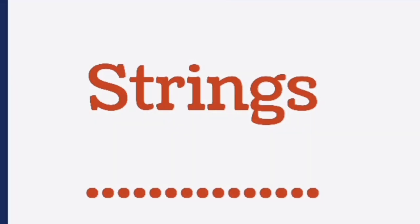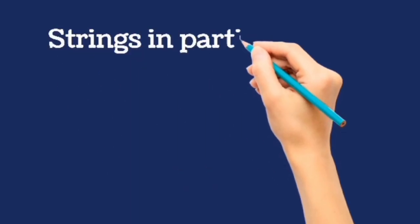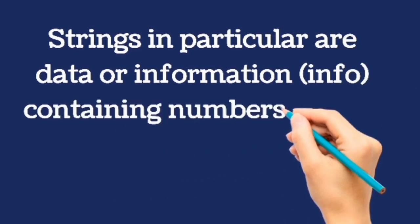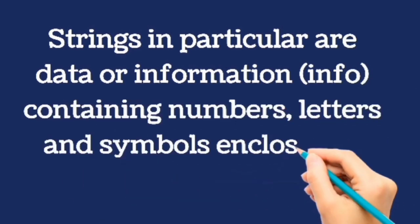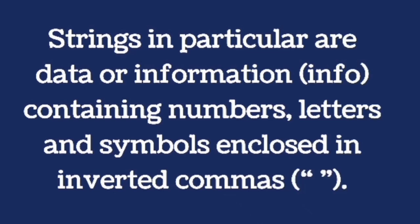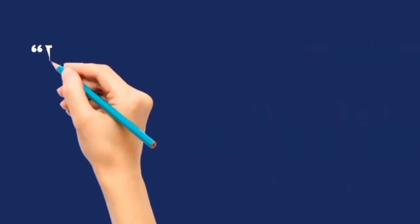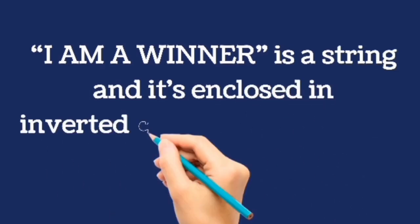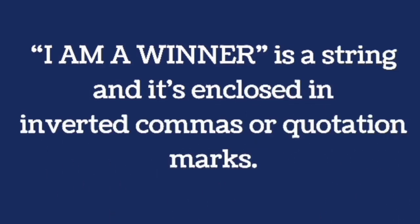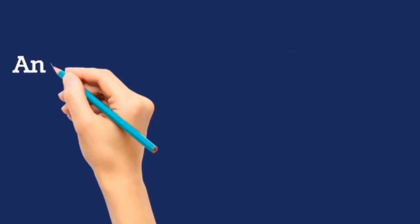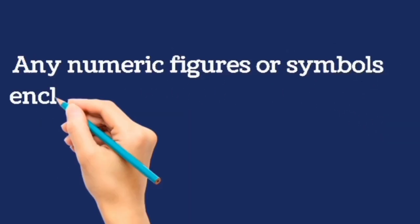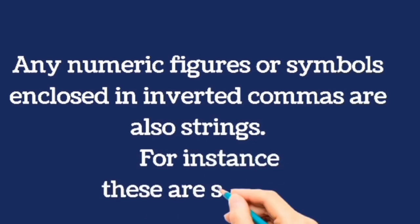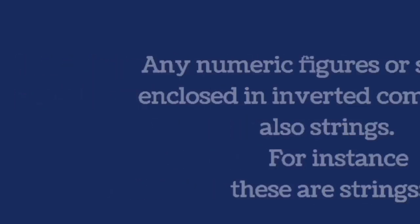3. Strings. Strings in particular are data or information containing numbers, letters, and symbols, enclosed in inverted commas. I am a winner is a string and it is enclosed in inverted commas or quotation marks. For instance, these are strings.